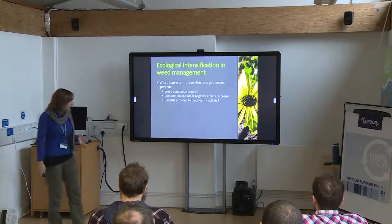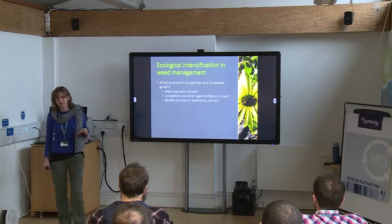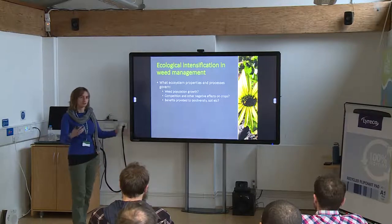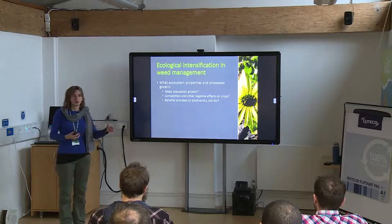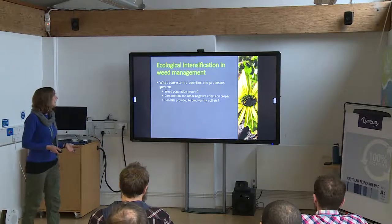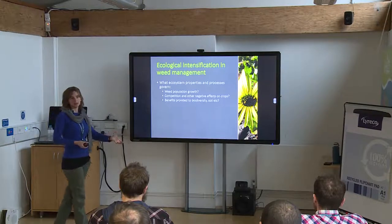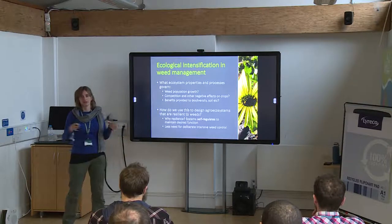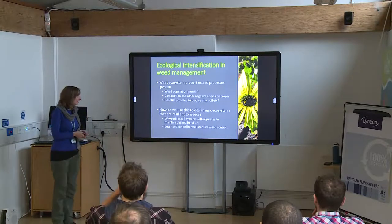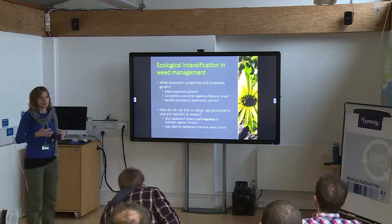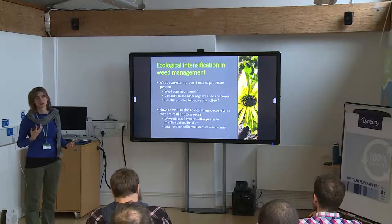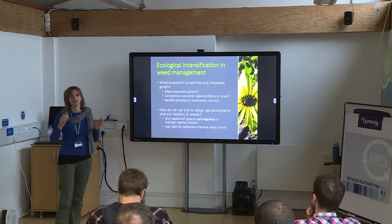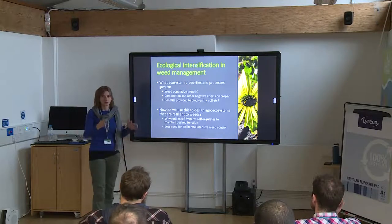So if we think about weeds specifically, the first thing we want to know is what ecosystem processes could we use — what governs weed population growth, what encourages them to keep growing through a field of crops, or what stops them? What is the relationship between weeds and crops — do they compete more in different conditions? How do we get positive effects from weeds? And when we understand those properties and processes, how do we design systems that are resilient to weeds? We use the term 'resilient' because it implies a system that self-regulates against a disturbance. If the disturbance is weeds arriving, we want the system to stop them causing a problem by itself — without herbicides and tractors.